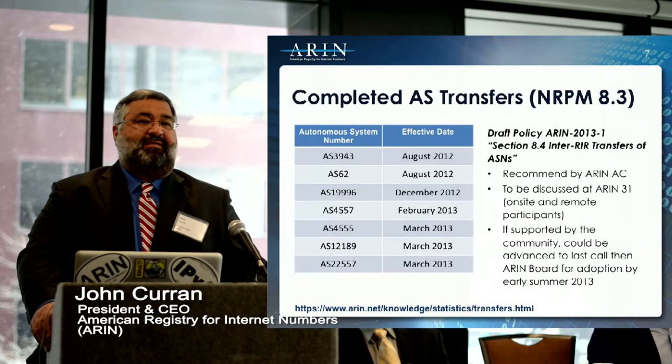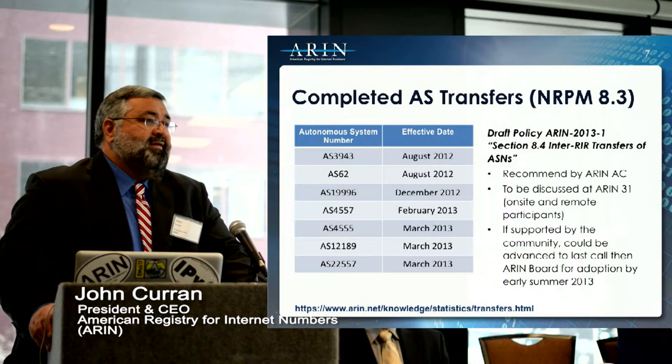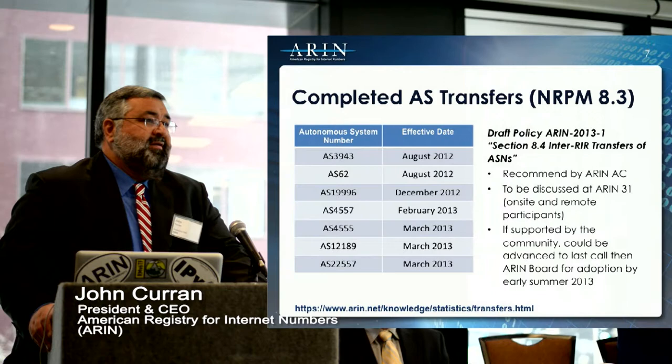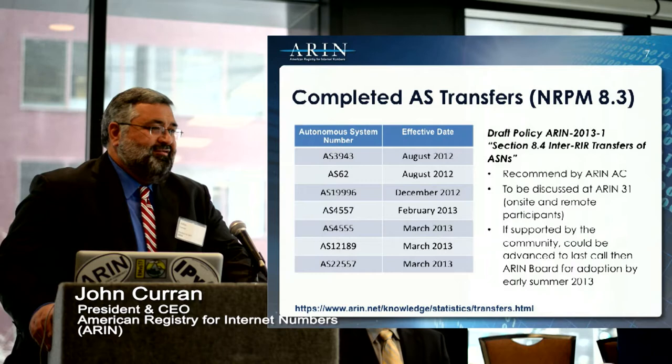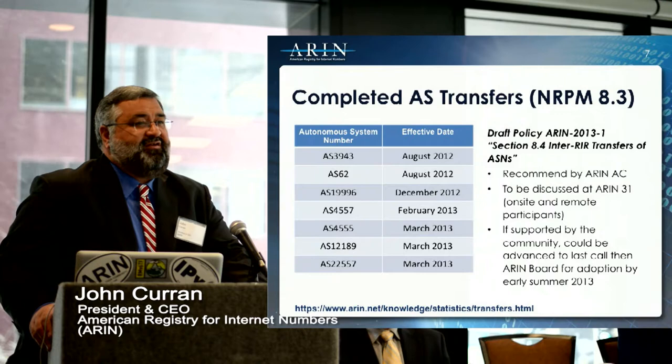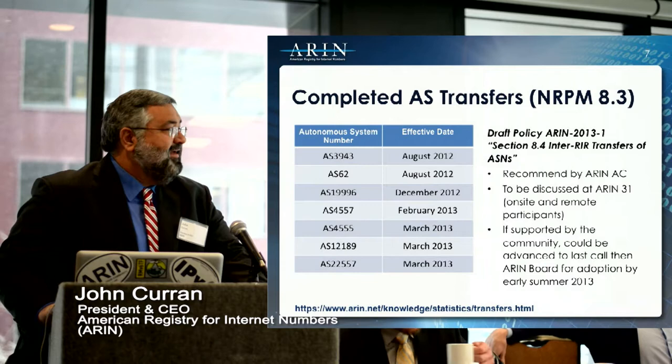Completed AS transfers — autonomous system numbers can actually be transferred. The policy allows that and we've had a small number of them. A lot of them are cleanup: organizations that over time have separated or moved, for example a government agency letting a small college use an AS number or address block. With a transfer policy, they can say they transferred it for one dollar and update the records — it makes for better record keeping. We don't have inter-RIR AS transfers currently.